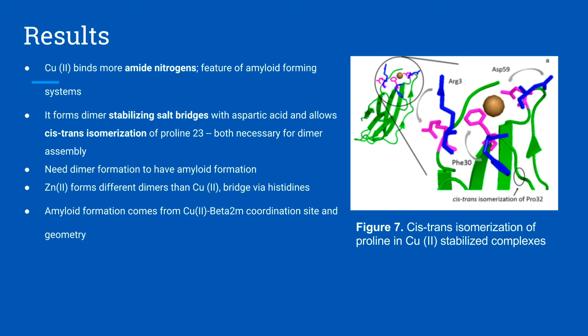Dimer formation is critical for amyloid formation. Zinc 2+ forms different dimers than copper 2+, which form via a bridge through the histidines. Amyloid formation comes specifically from copper 2+ with beta-2-microglobulin's coordination site as well as its geometry.